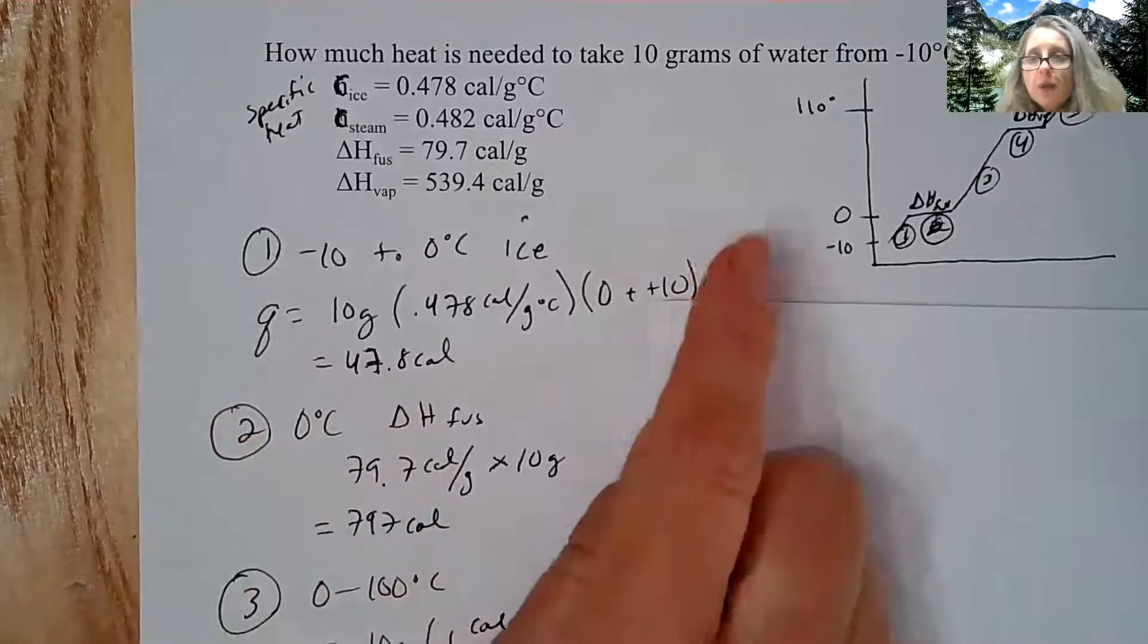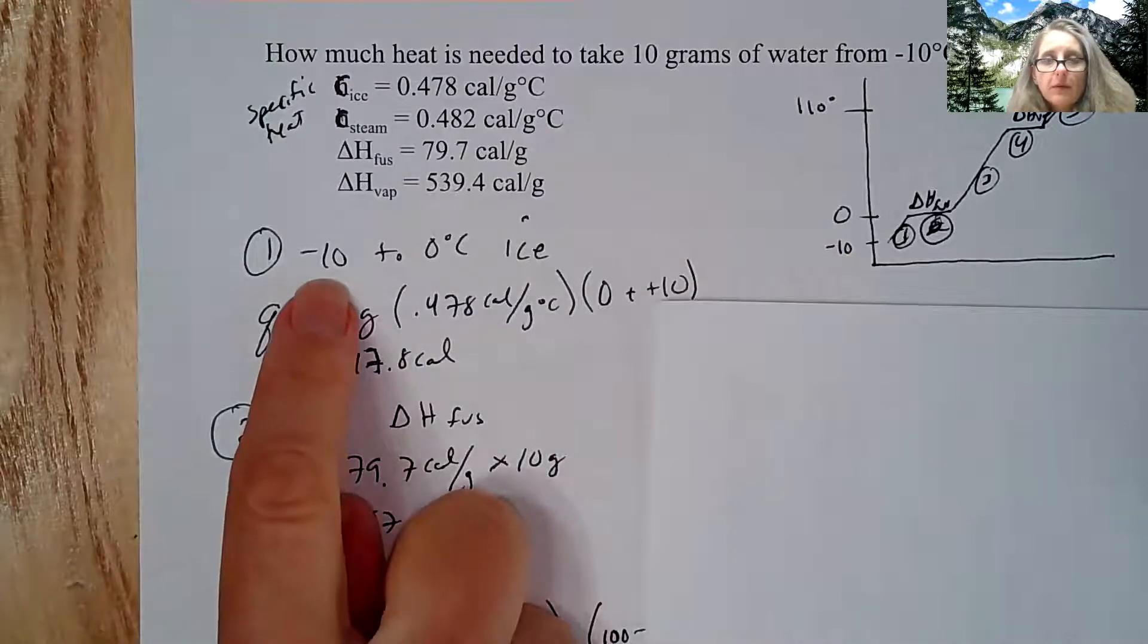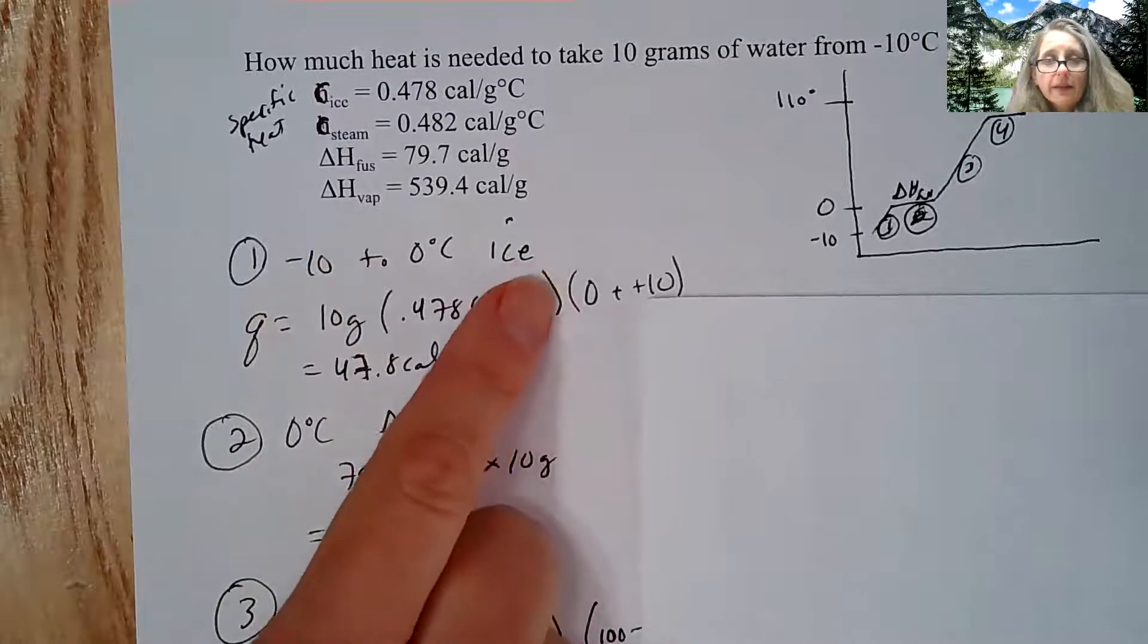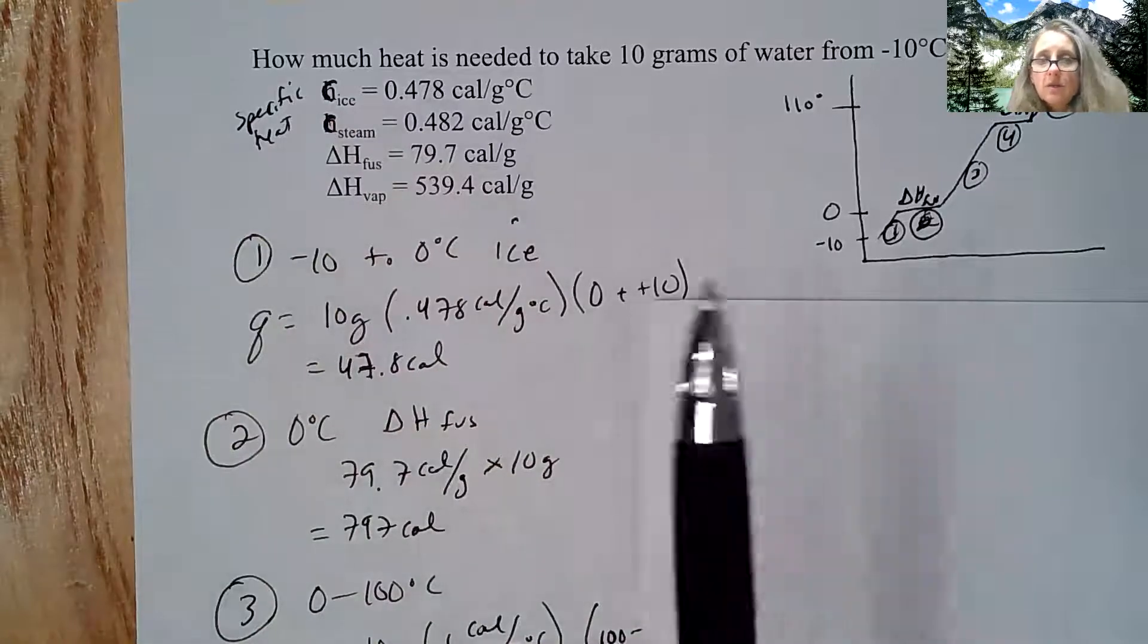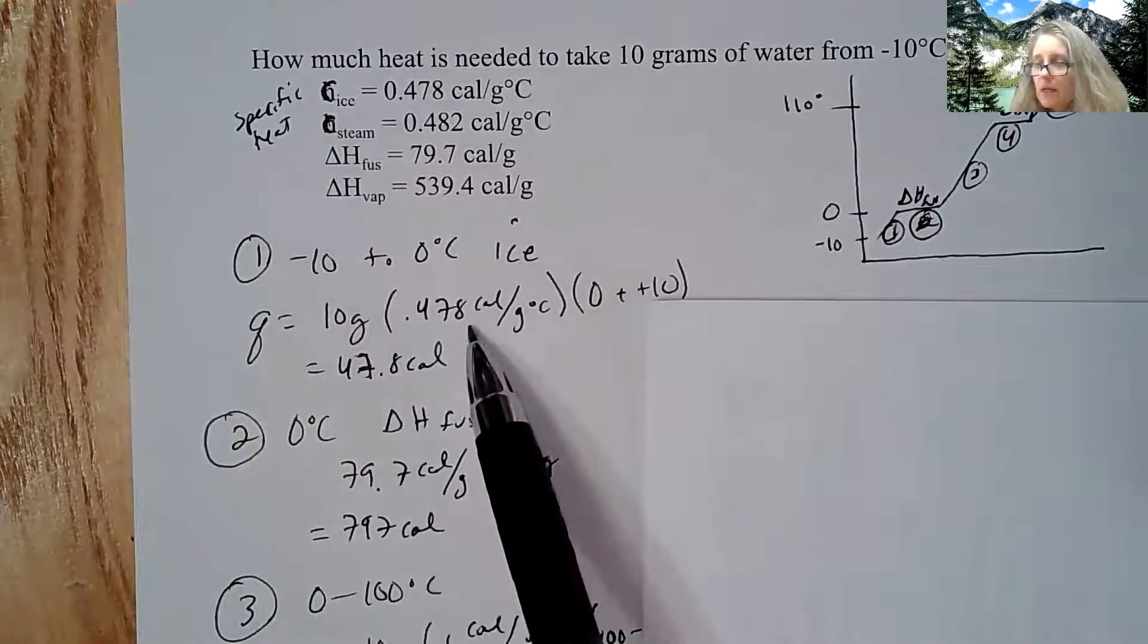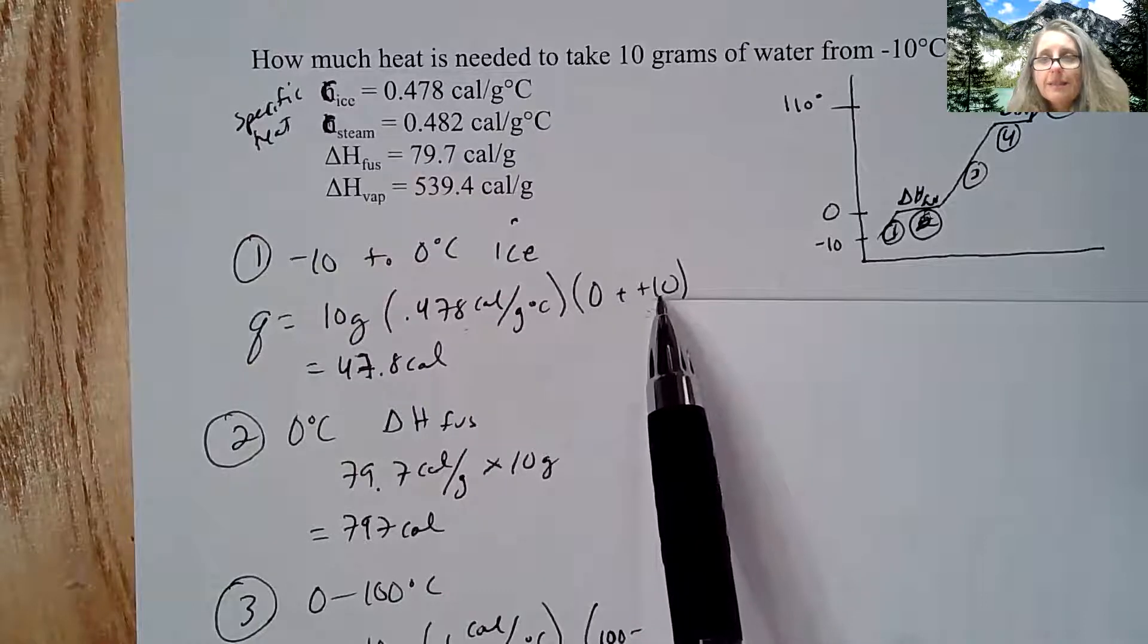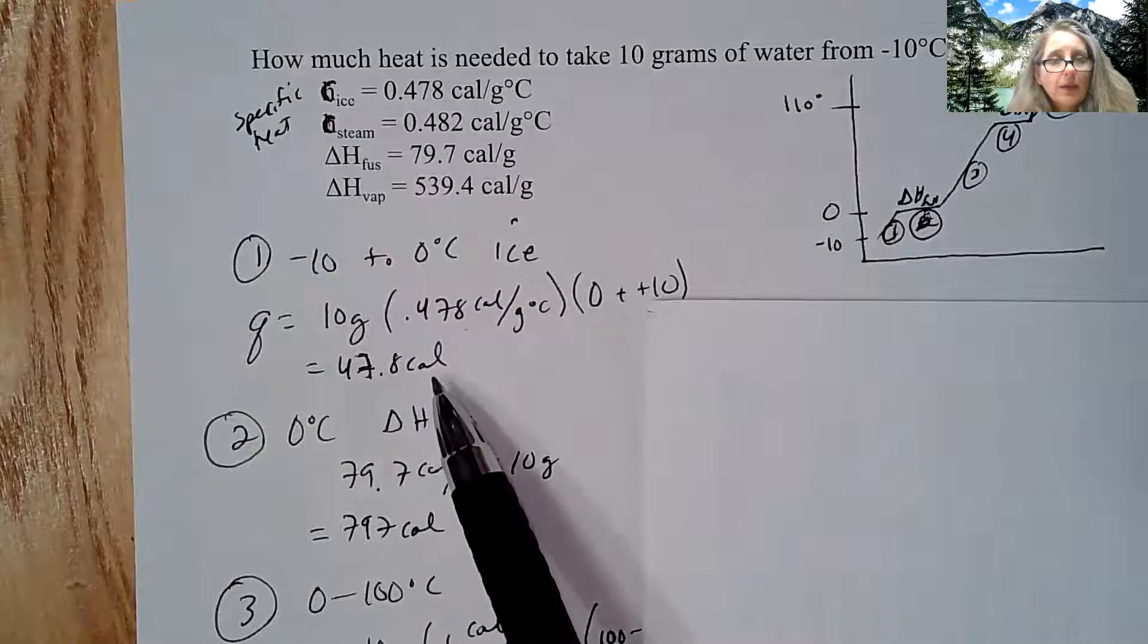So again, each part of this curve, you're going to do a different calculation. So if I'm going from negative 10 up to zero, I'm in this stage of solid. So I have to use the specific heat of ice. So I'm going to take my 10 grams times my specific heat of ice and then realize it's always final minus initial when we're doing the delta T. So it comes out to be 47.8 calories.